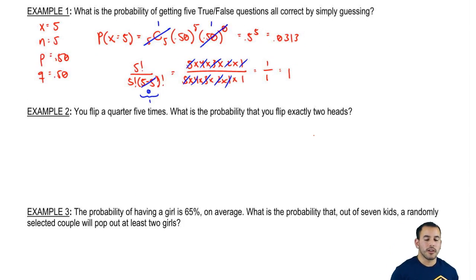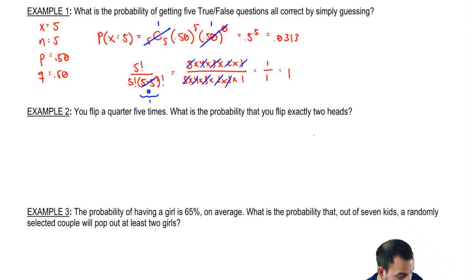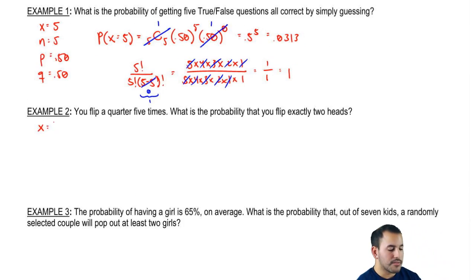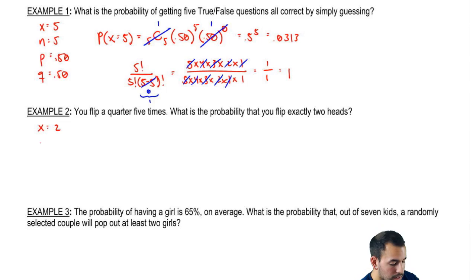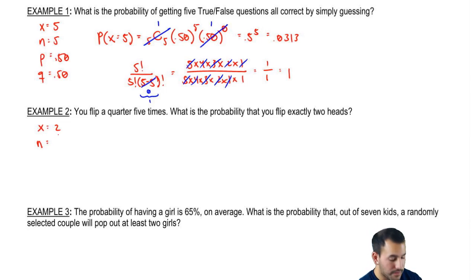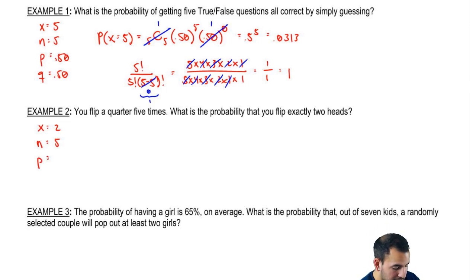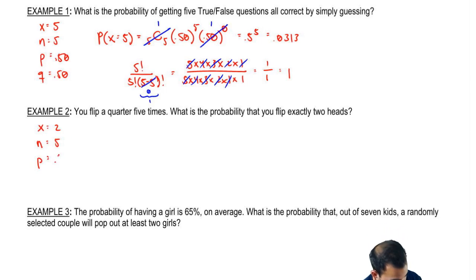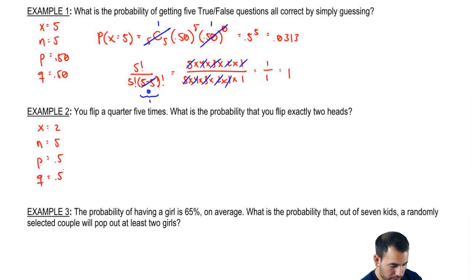Let's move on to our second example. You flip a quarter five times — what's the probability you flip exactly two heads? Our number of successes is two, the number of trials is five, the probability of getting heads is 0.5, and the probability of getting tails is 0.5.